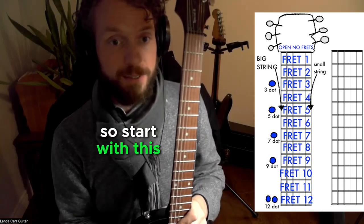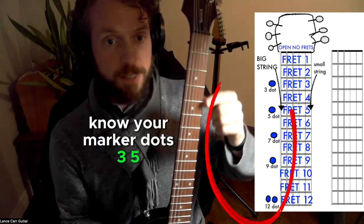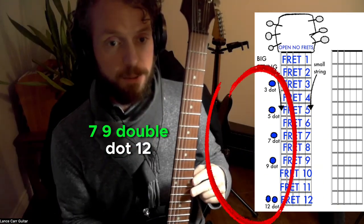So start with this. Know your big string and your small string. Know your marker dots, three, five, seven, nine, double dot twelve.